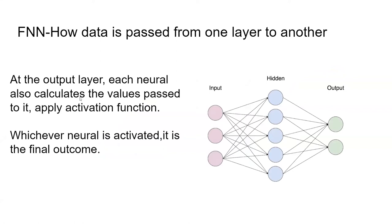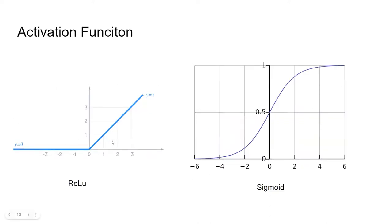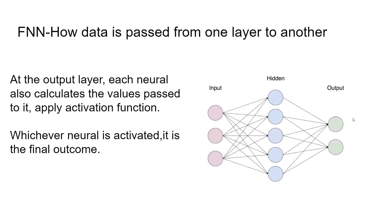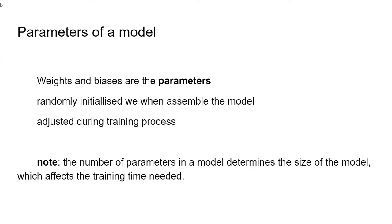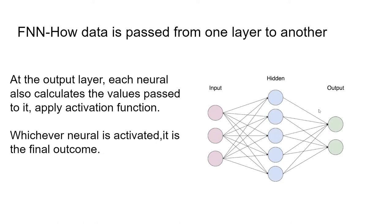At the output layer, each neuron also calculates the value passed to it and applies the activation function. If the value is less than zero it's thrown away; if greater than zero it's passed down. At the output layer, only one of the neurons will be activated — that activated neuron is the final outcome. For a model trained to differentiate between dogs and cats, one neuron represents cats and another represents dogs — whichever is activated is the model's prediction.